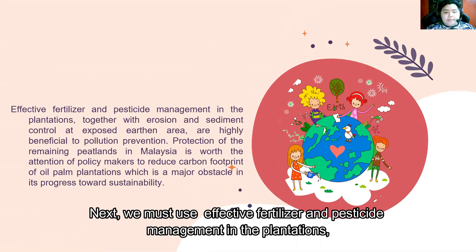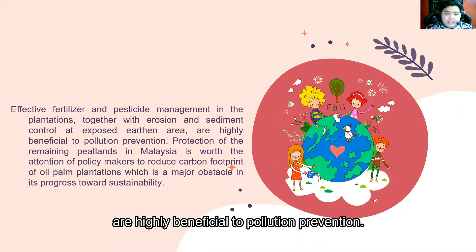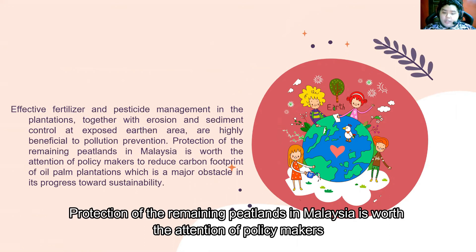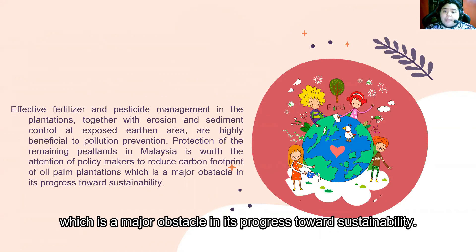Effective fertilizer and pesticide management in the plantation, together with erosion and sediment control in exposed areas, are highly beneficial to pollution prevention. Preservation of the remaining peatland in Malaysia is worth the attention of policy makers to reduce the carbon footprint of oil palm plantations, which is a major obstacle in progress towards sustainability.